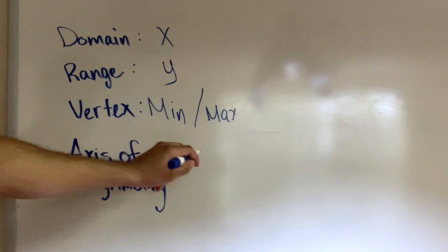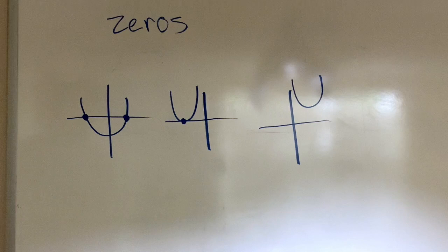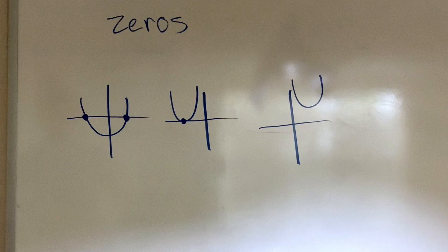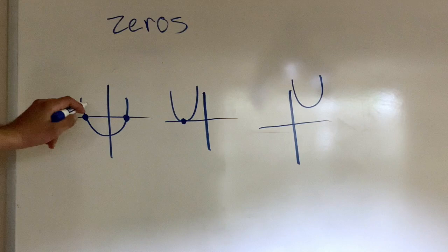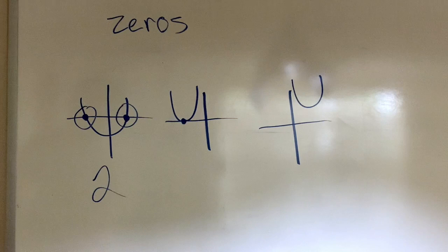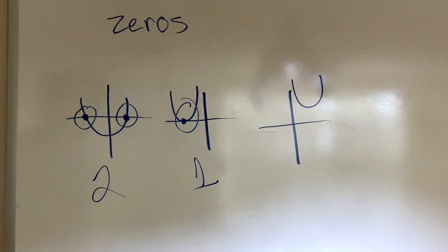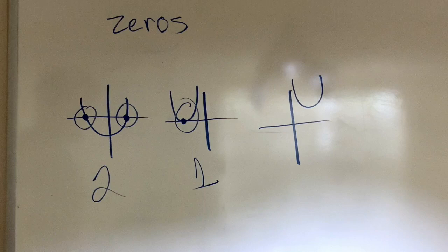And lastly, zeros, which are x-intercepts. When you graph your quadratic functions, you're going to be able to see that some parabolas have two solutions or two zeros. There's parabolas that only have one solution or one zero. And there are parabolas that have none - they never intercept the x-axis. So those are considered zero or no solutions.